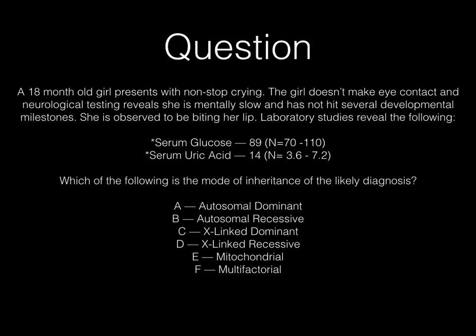What we're hinting at here is that this triad points to Lesch-Nyhan syndrome — a classic triad of mental retardation, self-mutilation, and gout. When we're done with this song today, you are going to know that Lesch-Nyhan syndrome is inherited in an X-linked recessive fashion. So the answer to this question is D, X-linked recessive.